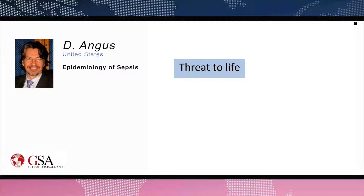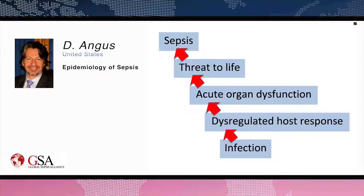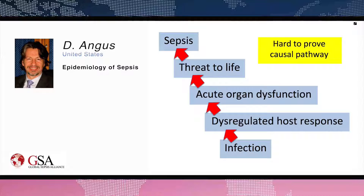Going back to our conceptual definition: regardless of how we've measured infection and organ dysfunction, the condition has to pose a threat to life. Critics could equally say that for the same septic challenge, the threat to life may not be constant — if you're in an ICU, the threat may be far lower than in an austere setting; if you're a young healthy teenager the same insult poses minimal threat, but if you're old with underlying disease it could be fatal. Finally, all these things must be linked in a causal pathway. Our clinical criteria include no way to prove that causal pathway.